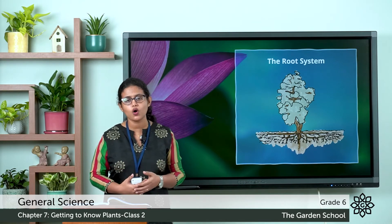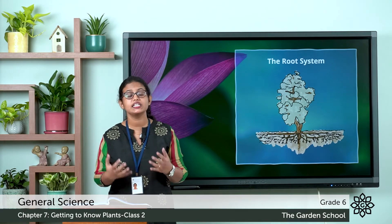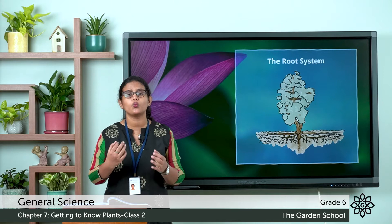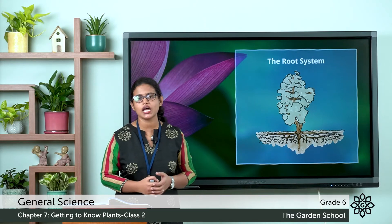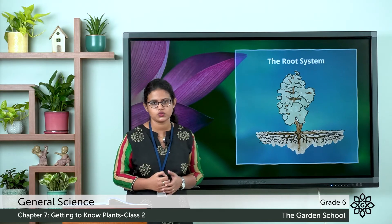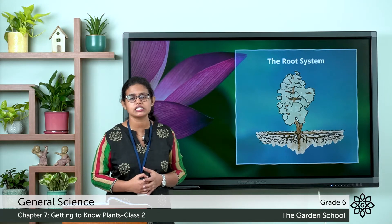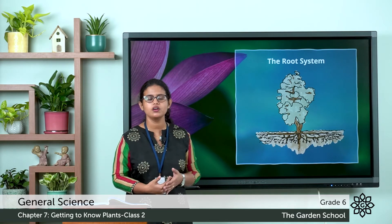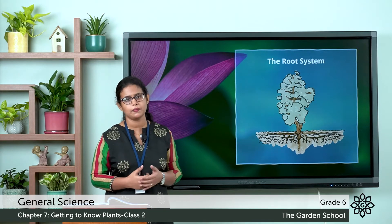So roots are one of the most important parts of a plant — they hold the plant firmly to the soil and they absorb water and minerals from the soil. These are the two main functions performed by the roots. And another important thing is every root has numerous fine structures called root hairs, which help the plant to absorb water and dissolved minerals.